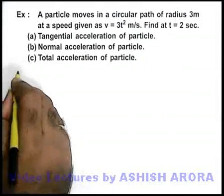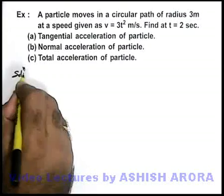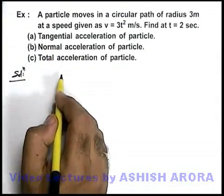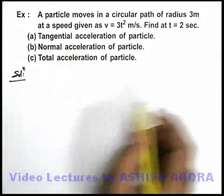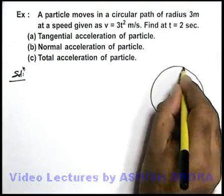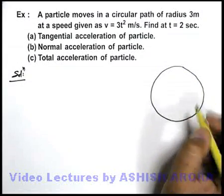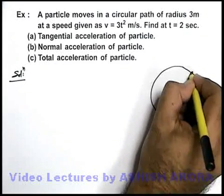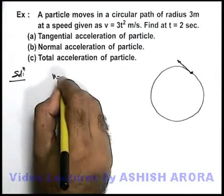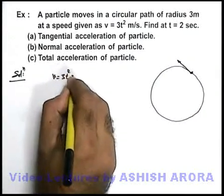Let us take up these things one by one. We are required to find tangential, normal, and total acceleration of the particle. We first visualize the situation. Say this is the circular path in which the particle would be moving, and say at any instant of time, particle's velocity is given to us as v equals 3t² meters per second.